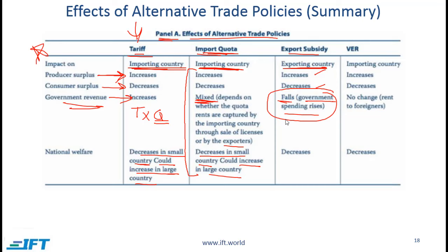With a voluntary export restraint, the impact is on the importing country. The producer surplus increases, consumer surplus decreases, there is no impact on government revenue — the benefit is captured by the exporter — and national welfare goes down.